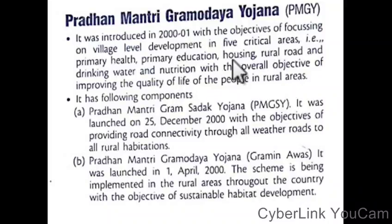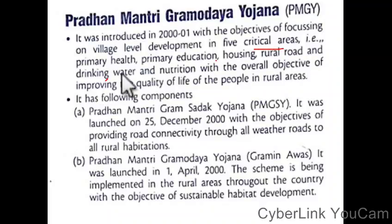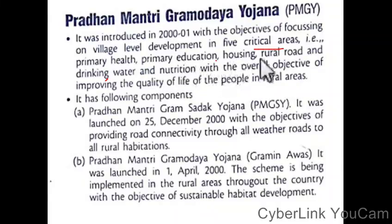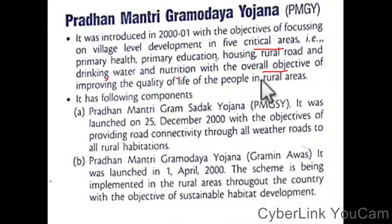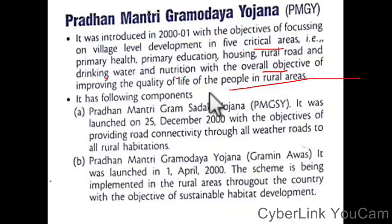PMJ or GYT has private sector criteria for health, education, house, rural roads, and drinking water. It also covers health, education, drinking water, and nutrition. The overall objective is to improve the quality of life of rural people.